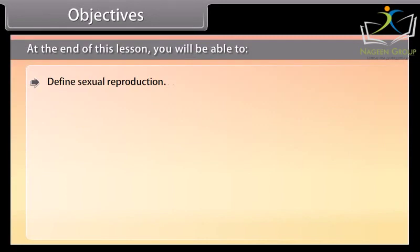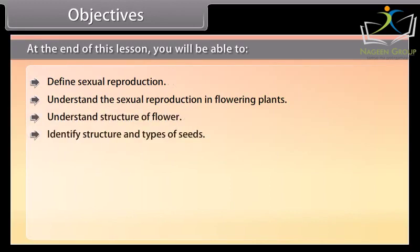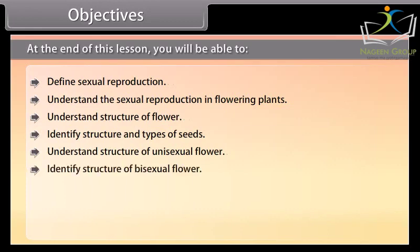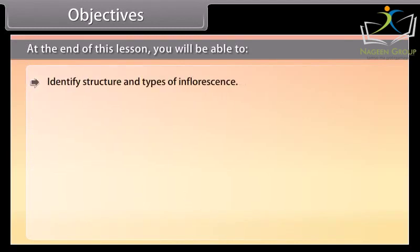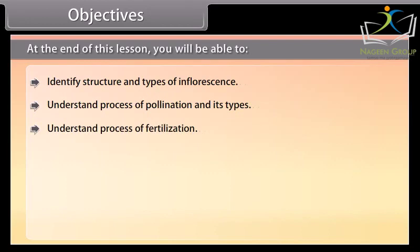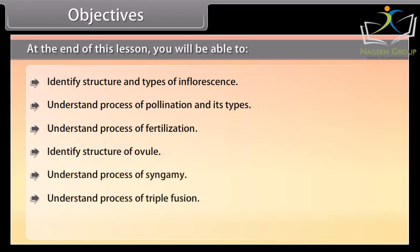Define sexual reproduction, understand the sexual reproduction in flowering plants, understand structure of flower, identify structure and types of seeds, understand structure of unisexual flower, identify structure of bisexual flower, understand structure of neuter flower, identify monoecious and dioecious plants, understand functions of flower, identify structure and types of inflorescence, understand process of pollination and its types, understand process of fertilization, identify structure of ovule, understand process of syngamy, understand process of triple fusion, understand process of double fertilization.